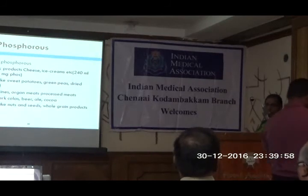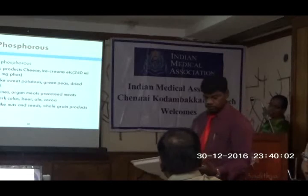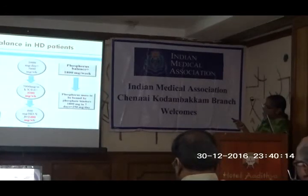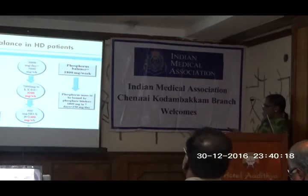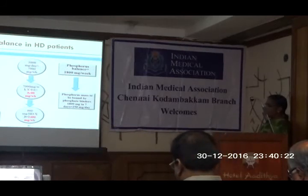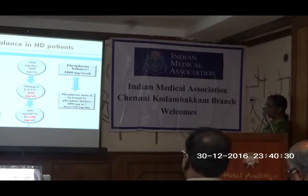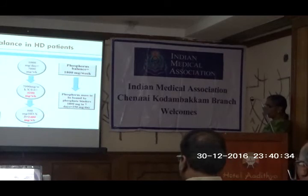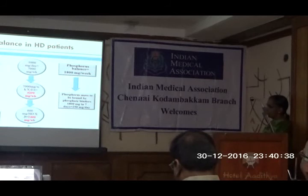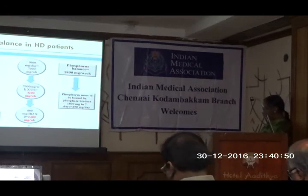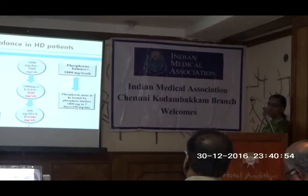Meat and meat products are very high in phosphorus, so a Western diet gives a large load of phosphorus compared to an Indian diet. The phosphorus intake is around 800 to 1000 mg per day, approximately 7000 mg per week. About 60% is absorbed by the intestines, giving a load of 4200 mg. Hemodialysis done for 4 hours about 3 times a week removes around 2400 mg of phosphorus. The remaining 1800 mg per week — about 250 mg per day — has to be removed by binding to phosphorus binders.